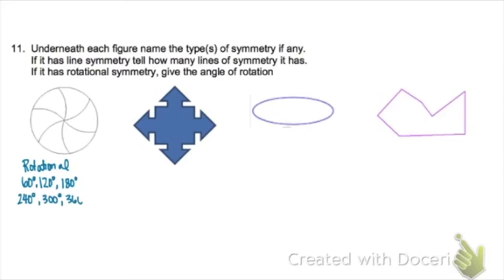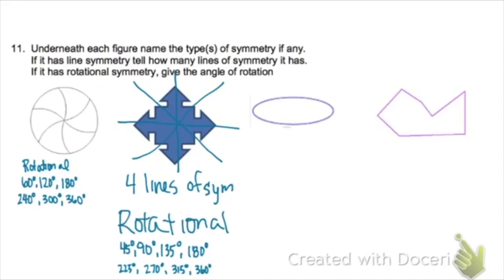This first one is rotational symmetry with all of those degrees of rotation. This second one has rotational symmetry and lines of symmetry. So it has 4 lines of symmetry, and it has rotational symmetry. That is wrong. Okay, this should be 90 degrees, 180 degrees, 270 degrees, and 360 degrees. Sorry about that.